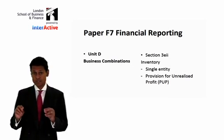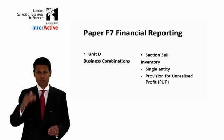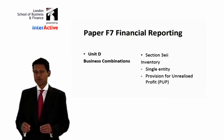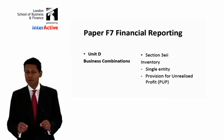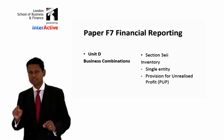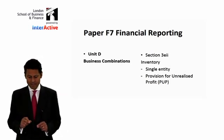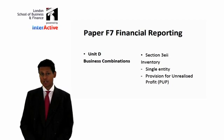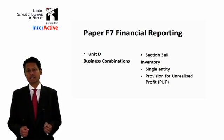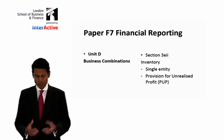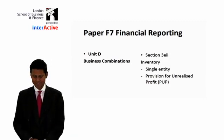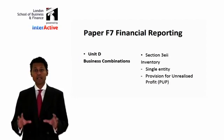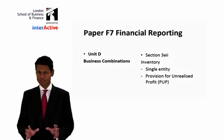Within Unit D there are lots of sections. Within that, Section 3, which has a subsection E, and within that there are some sub-subsections. I've indicated there that Section 3E2 is dealing with inventory. So if you look at the detailed guide to the syllabus available on the ACCA website, you'll see all this there. I thought I'd locate each item in the syllabus, so you know exactly what I'm doing and indeed why I'm doing it.